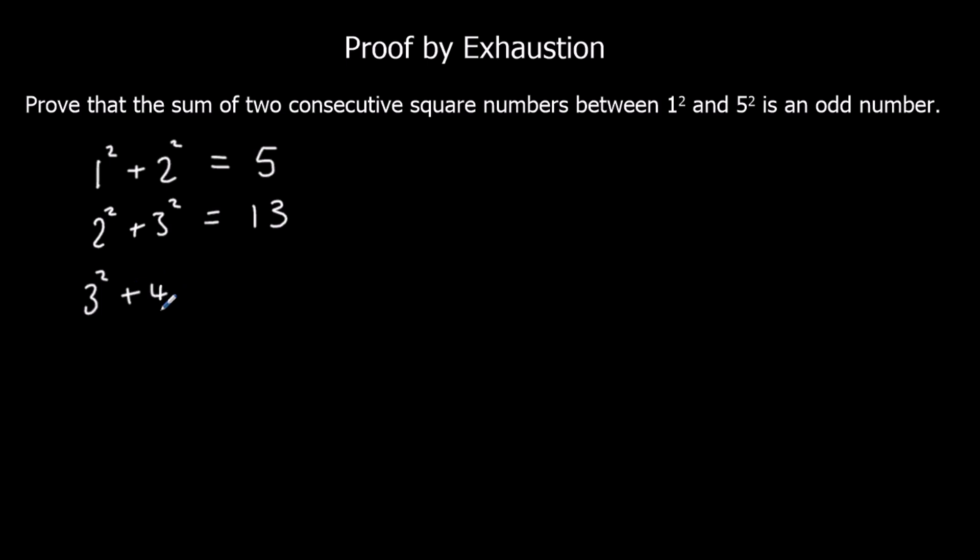3 squared plus 4 squared, so 9 plus 16, is 25. And we can have 4 squared plus 5 squared, so 16 plus 25 is 41. So prove that it's an odd number. All options are odd. Therefore, it's been proved by exhaustion.